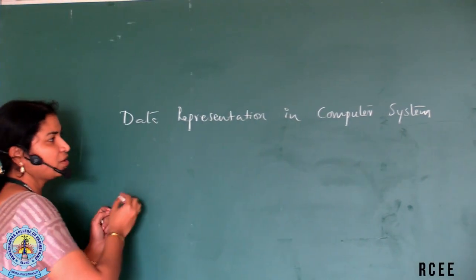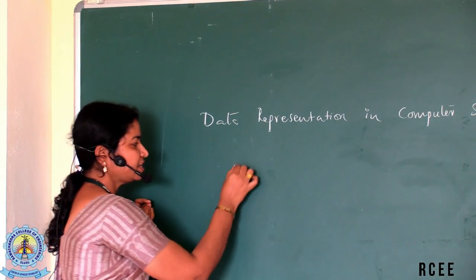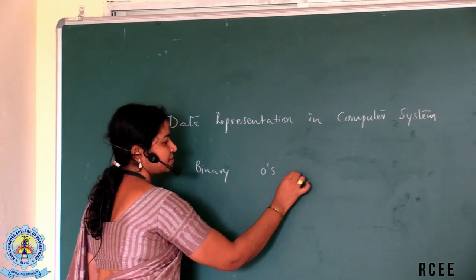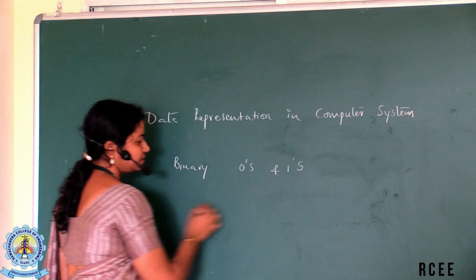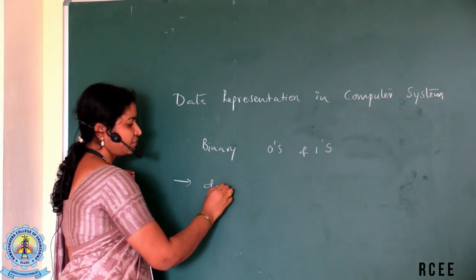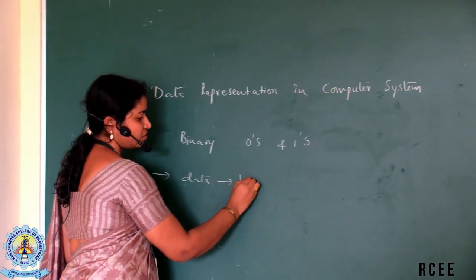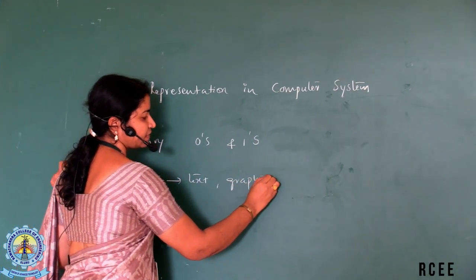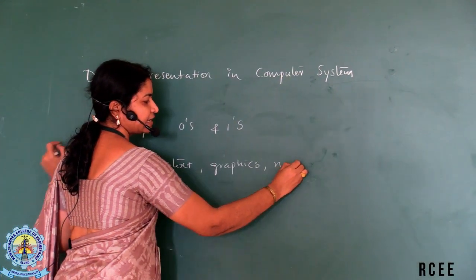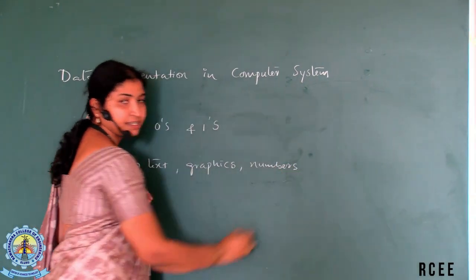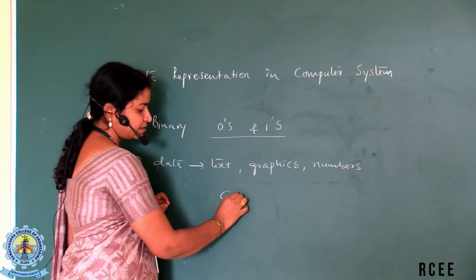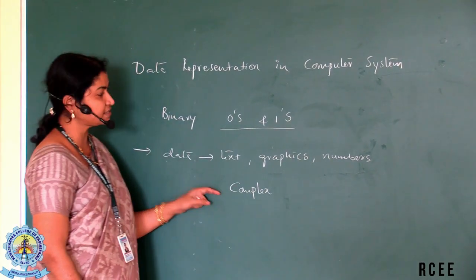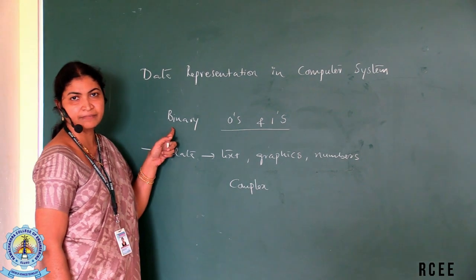We all know that a computer can understand only the binary language which is in terms of zeros and ones, but the data which is in the form of text or graphics, numbers, everything cannot be represented in a form of zeros and ones. As the data becomes complex, we cannot create in the form of binary.